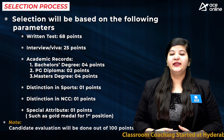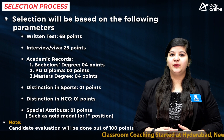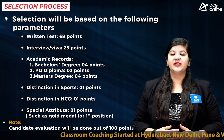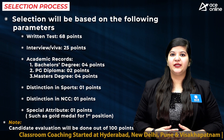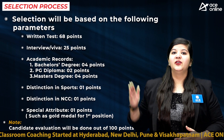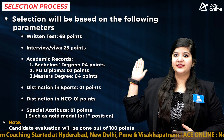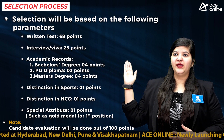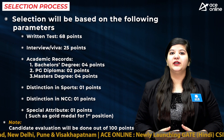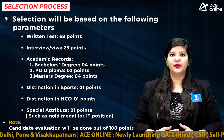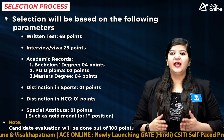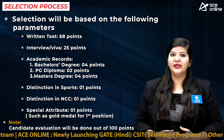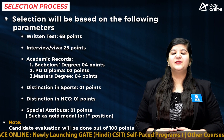Candidate evaluation will be done out of 100 points. The weightage given to different parameters is: written test — 68 points, interview or viva — 25 points, and other higher academic records and special attributes — the remaining points as mentioned above.